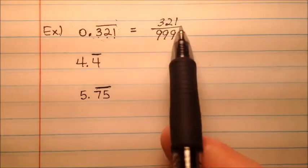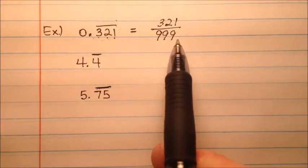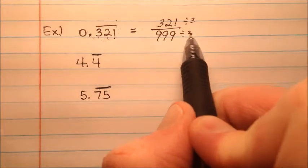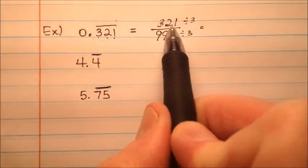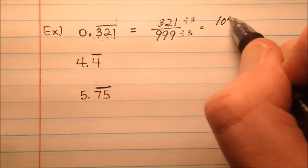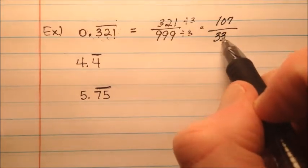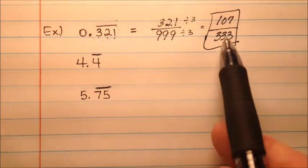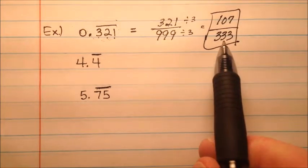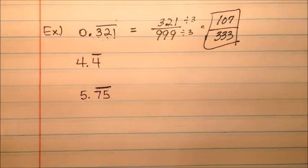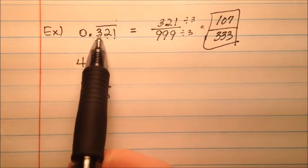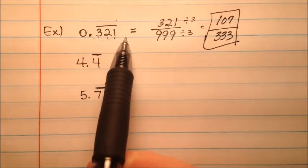And when I look to reduce this, I notice that both the numerator and the denominator are divisible by 3. So if I take a 3 out of each one of those, I'll notice 107 with my numerator. So 107 over 333. And this can't be reduced any further, so 107/333 would be the fraction. You can get your calculator out and divide 107 by 333, and you'll get 0.321321321 on your calculator.